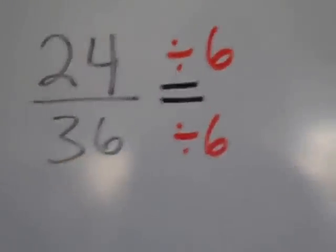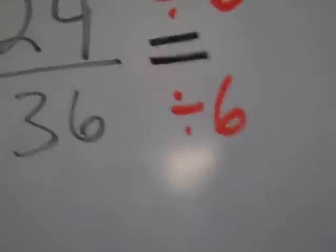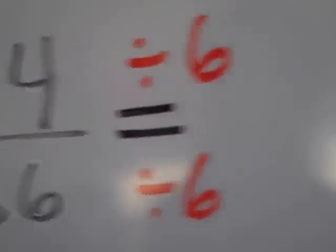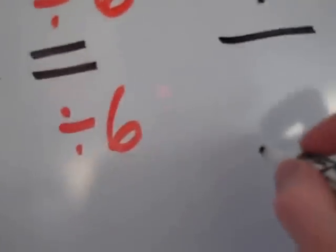You could have also done 2 or 3, whatever you know works. So I know that 6 goes into both of these numbers. 24 divided by 6 is 4, and 36 divided by 6 is 6.